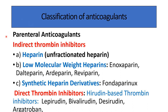There are two types of anticoagulants: parenteral anticoagulants and oral anticoagulants. The first group is parenteral anticoagulants, which include indirect thrombin inhibitors and direct thrombin inhibitors. Indirect thrombin inhibitors include unfractionated heparin and low molecular weight heparin — drugs such as enoxaparin, dalteparin, ardeparin, and reviparin. Synthetic heparin derivatives include fondaparinux. Direct thrombin inhibitors are hirudin-based, like lepirudin, bivalirudin, desirudin, and argatroban.